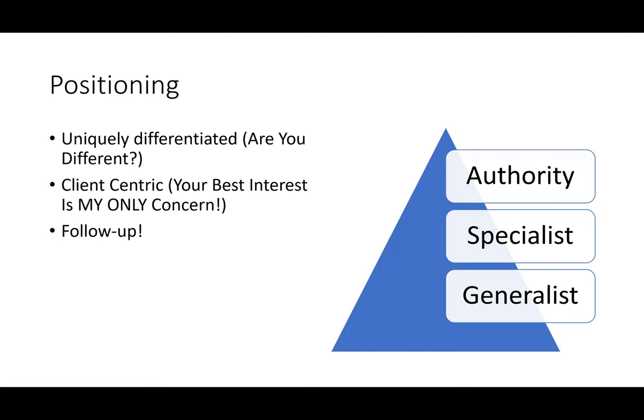About 85% of all sales are made after the fifth contact — the fifth part of the relationship. Those contacts could be telephone, electronic, or live in person, but usually it takes more than five. Most salespeople only do three, and that's the difference. Rainmakers follow up.